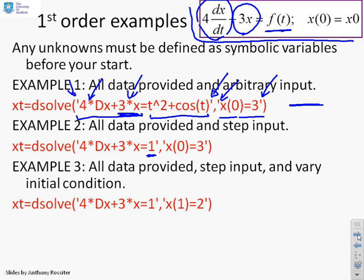A third example. What happens if all the data's provided, I want a step input, but I'm going to provide the initial condition in a slightly different form. So instead of saying I've got the state at time 0, you'll notice the initial condition has said I know what the value of the state is at time 1. So I'm providing the initial condition as x(1) equals 2 in this case.